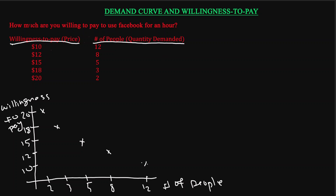Now we can join all the points together, and the curve you get from joining these points is what we call the willingness to pay curve.